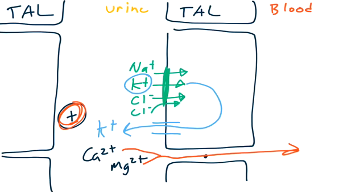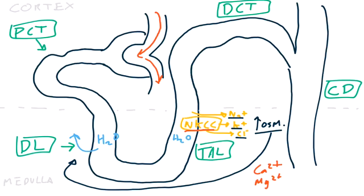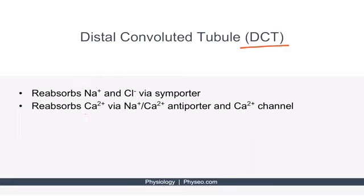As urine reaches the top of the thick ascending limb or the beginning of the distal convoluted tubule, the urine has lost the majority of its salt while retaining water—so the urine is very dilute, more dilute than at any prior point in the nephron. Now the distal convoluted tubule, or DCT, reabsorbs sodium and chloride from the urine using a sodium-chloride symporter, further diluting the urine. The distal tubule also reabsorbs calcium.